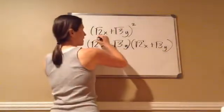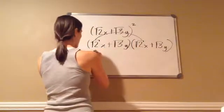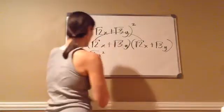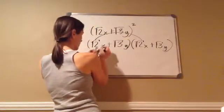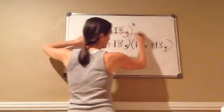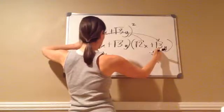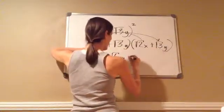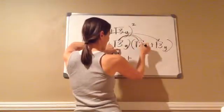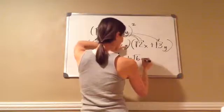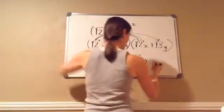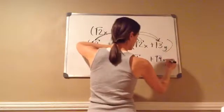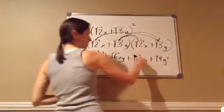Now pay attention to how I do it. Square root of 2 times the square root of 2 gives me the square root of 4, and x times x gives me x squared. Remember, square root of 4 is not a part of the x. Plus, square root of 2 times the square root of 3 gives me the square root of 6, and x times y. Plus, square root of 3 times the square root of 2 gives the square root of 6, and again x times y. Then plus square root of 3 times the square root of 3 gives the square root of 9, and y times y gives y squared.